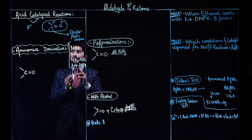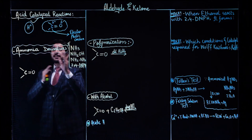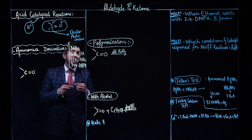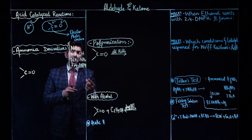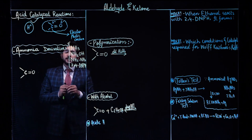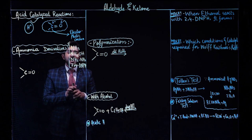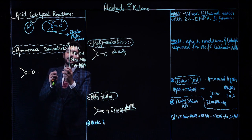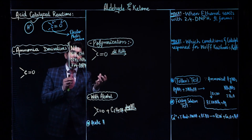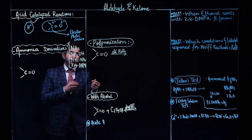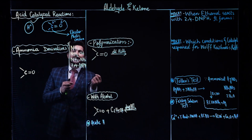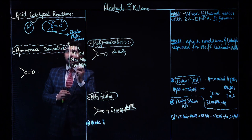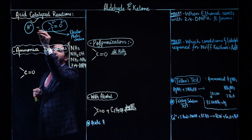So it means that acid-base catalyzed reactions, as we discussed for aldehydes and ketones, actually increase the speed of the reaction in different ways. When base is used, the base makes the nucleophile's attack stronger. In this case, acid actually increases the electrophilicity of the carbonyl carbon, increasing its electrophilic character. This is the concept behind the acid catalyzed reaction.